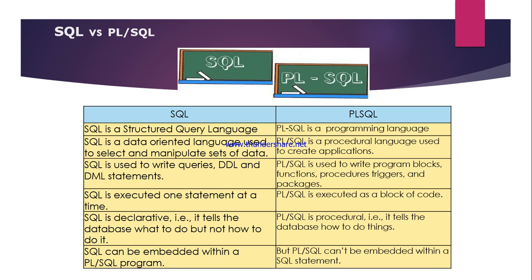In SQL, to talk with a database we use four types of statements: DDL, DML, TCL, and DCL. DDL stands for Data Definition Language, DML stands for Data Manipulation Language, TCL stands for Transaction Control Language, and DCL stands for Data Control Language. Under each of these four statement types, there are further statements that will be explained in future sessions.